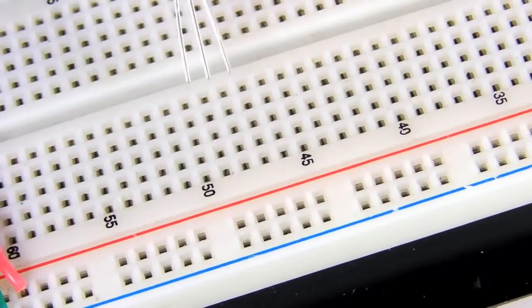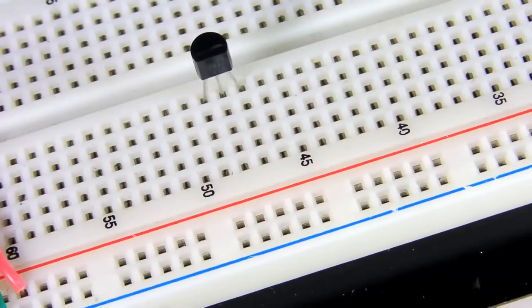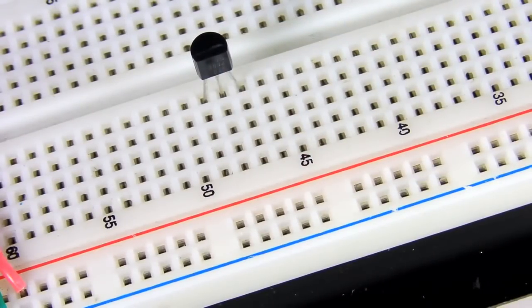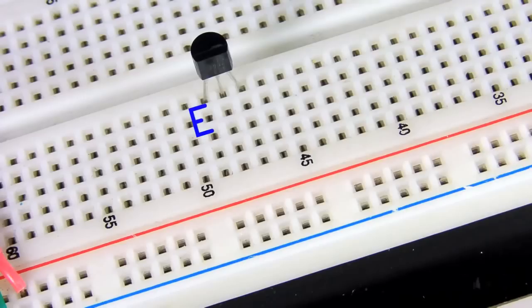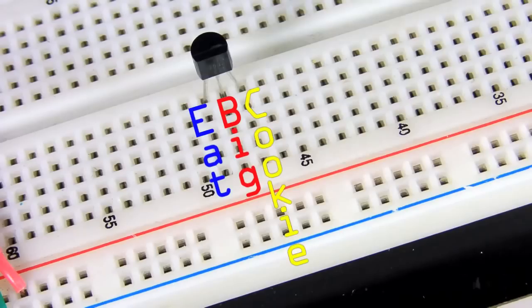That 2N3904, that's a bipolar junction transistor, NPN type. Of course, its leads correspond to the terminals we talked about in the schematic. From left to right, they are the emitter, base, and collector. You can always remember the order with a simple phrase like 'eat big cookie' or something similar.